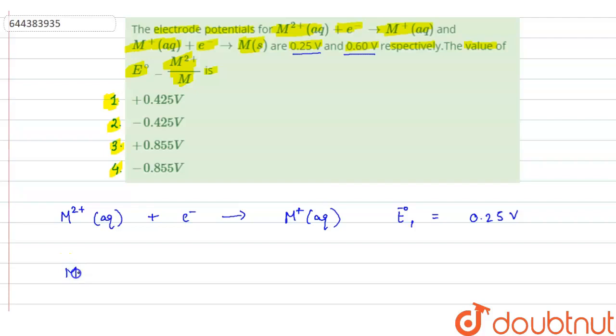And for the second reaction, M⁺(aq) when gaining 1 electron will form M(s). For this reaction, electrode potential, let it be E⁰₂, is given as 0.60V.